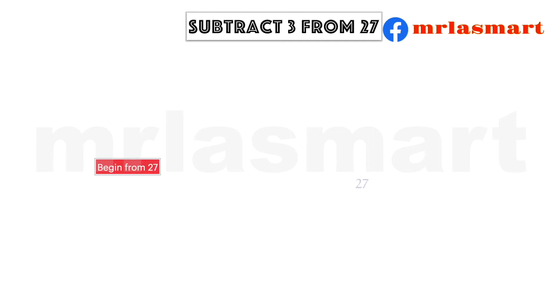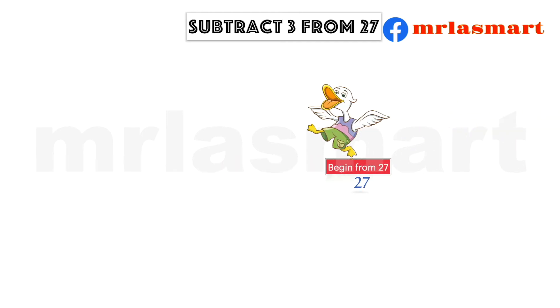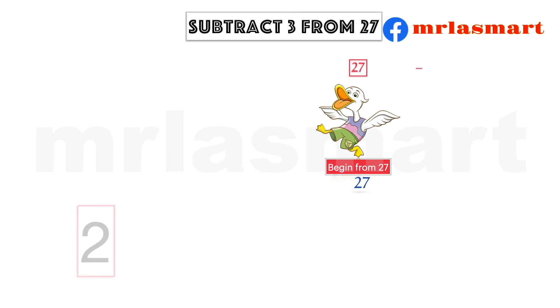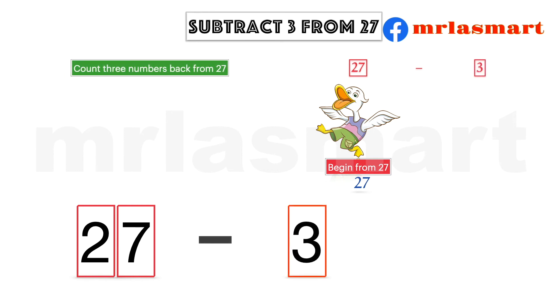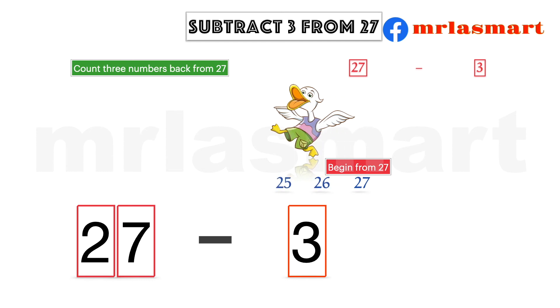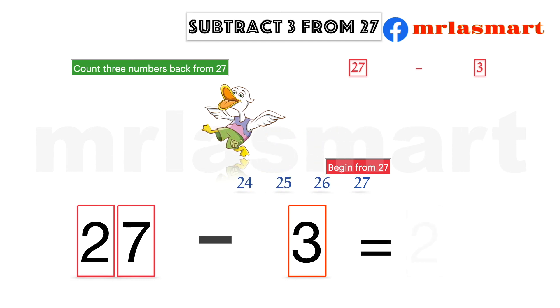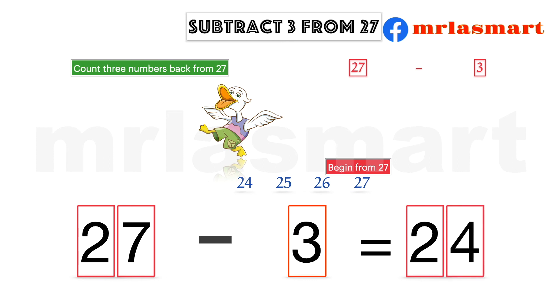Subtract 3 from 27. Begin from 27. Count 3 numbers back from 27. 27 minus 3 equals 24.